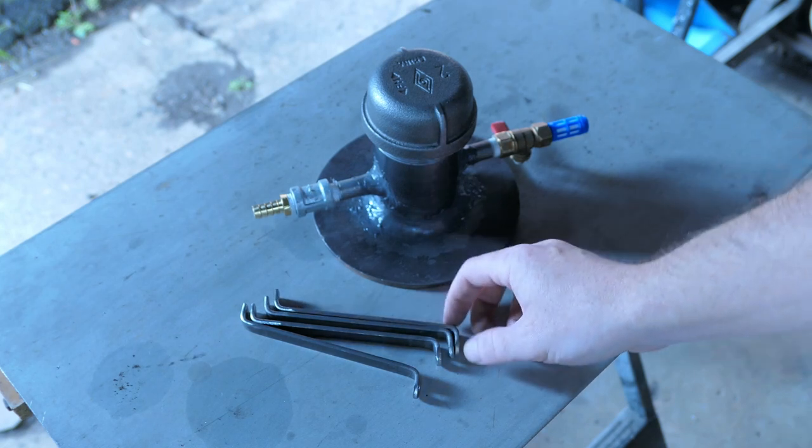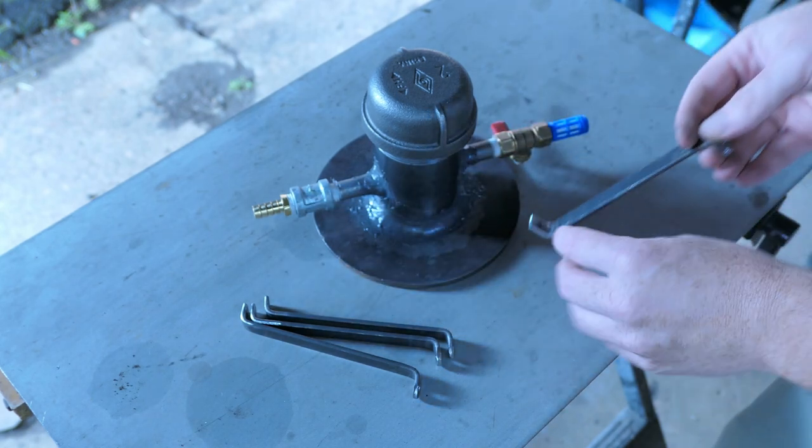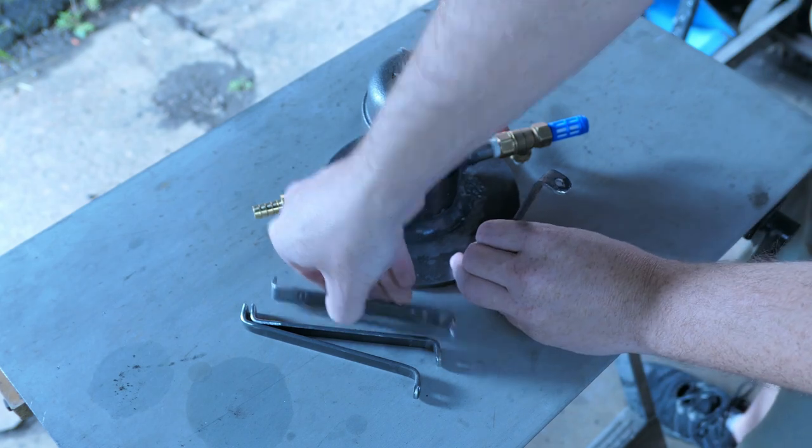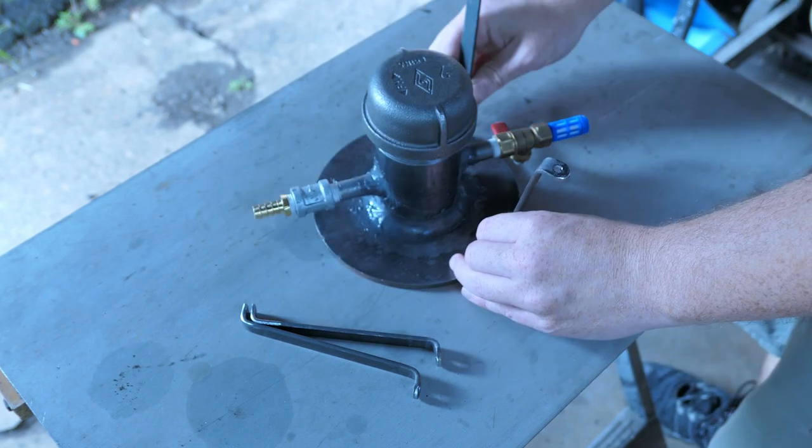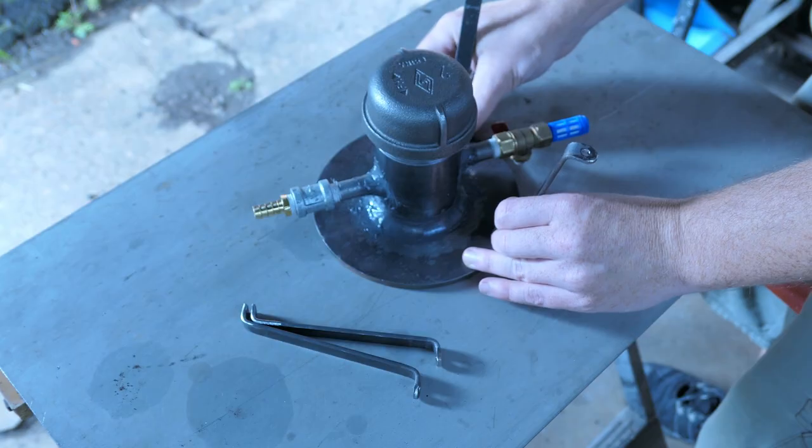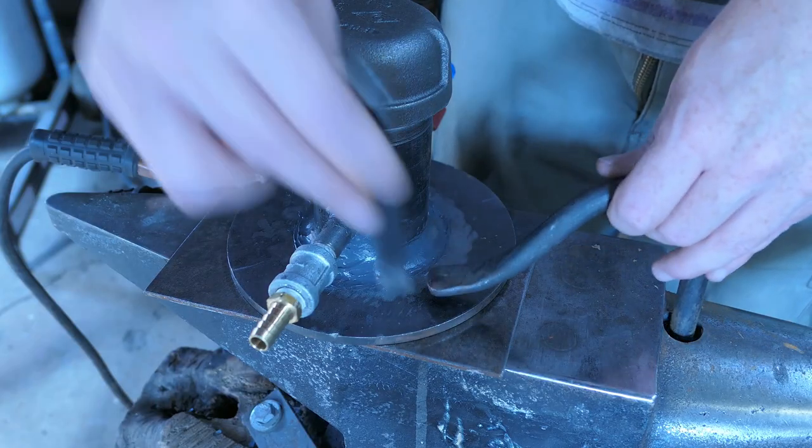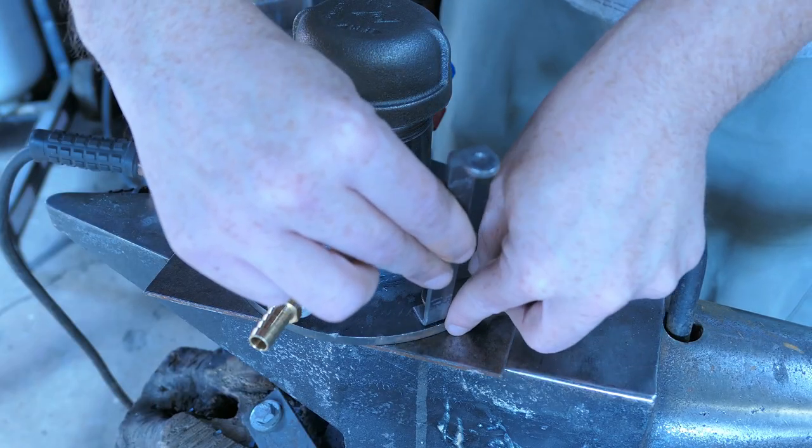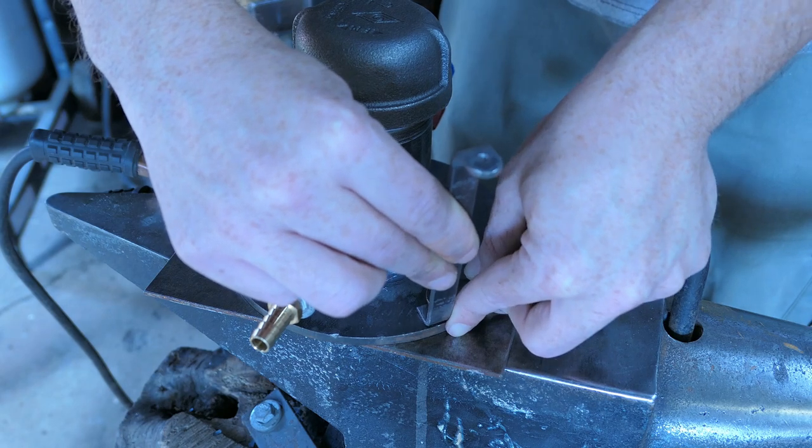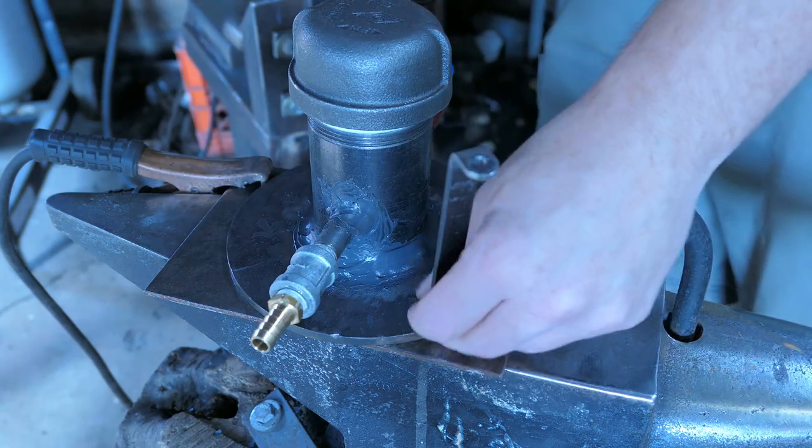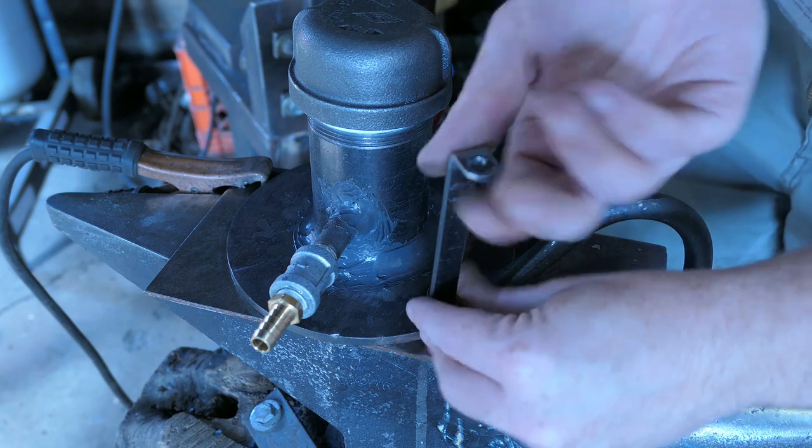Now I can mark out where I want the legs to be so they don't interfere with the hose or the pipe fittings. And because I couldn't really hold them in place using a magnet, I'm using the holdfast on my anvil to help line them up while I tack them in place.